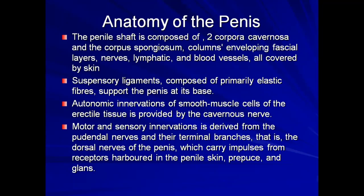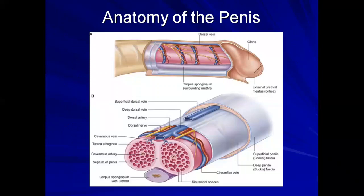This is where the role of reflexogenic erection comes in, because it arises as a consequence of touch. When the penis is touched, there is a likelihood of it becoming erect. Looking at the anatomy image, we see the glans penis and the external urethral orifice, which is important in terms of some treatment options we will discuss.